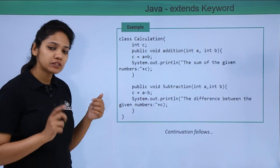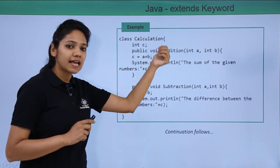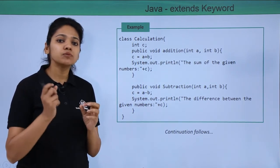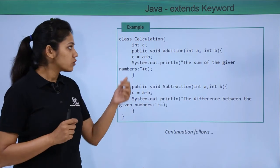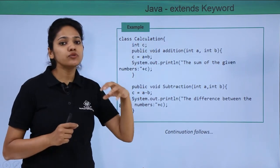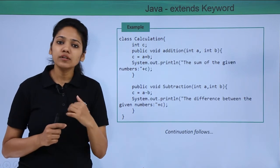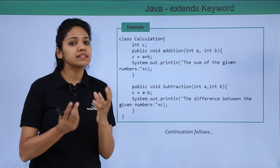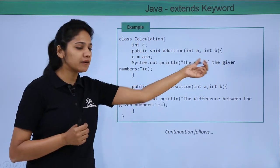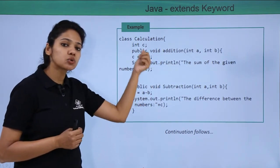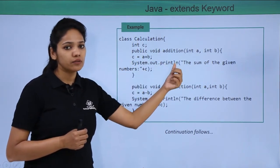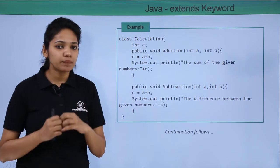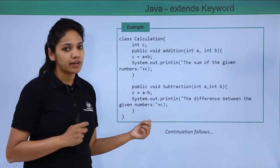In this program we have created two classes where the first class is called Calculation. In this class we define methods that perform addition and subtraction. We have created an instance variable c which will hold the sum or the difference of a and b. We created an addition method that takes parameters, adds a plus b, stores it in c, and prints the value. Similarly, the subtraction method takes values in parameters, stores the difference in c, and prints the value.